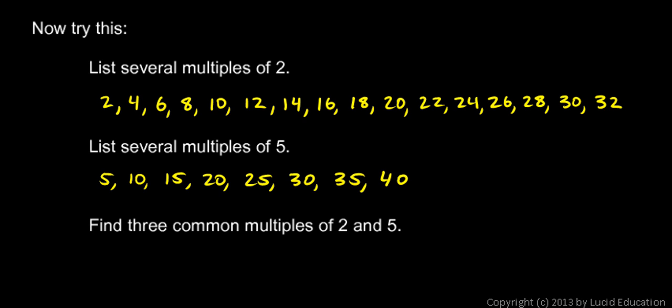Now we're told here, find three common multiples of 2 and 5. So let's look at the numbers. Let's find a number that's a multiple of 2 and is also a multiple of 5. Well, I see the number 10 here is in both lists. So 10 is a multiple of 2 and a multiple of 5.